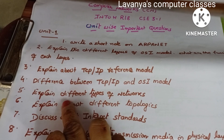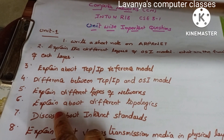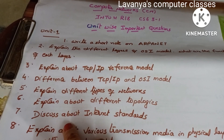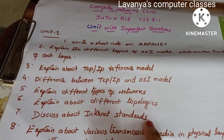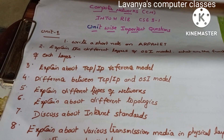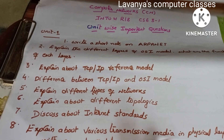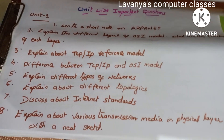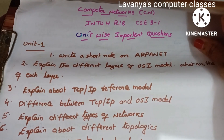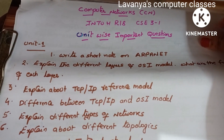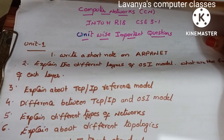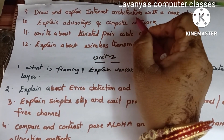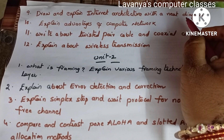Next, explain different types of networks — a simple question. Explain about different topologies. Seventh question: discuss about internet standards. Eighth question: explain about various transmission media in the physical layer with a neat sketch. There are also questions on explaining internet architecture with a neat diagram.